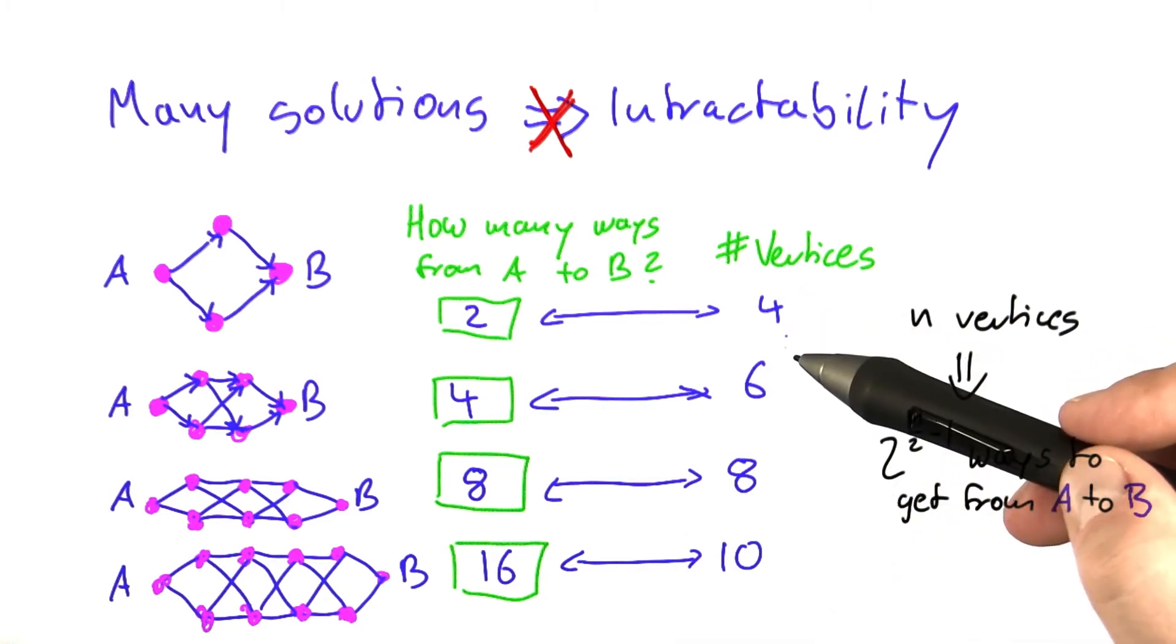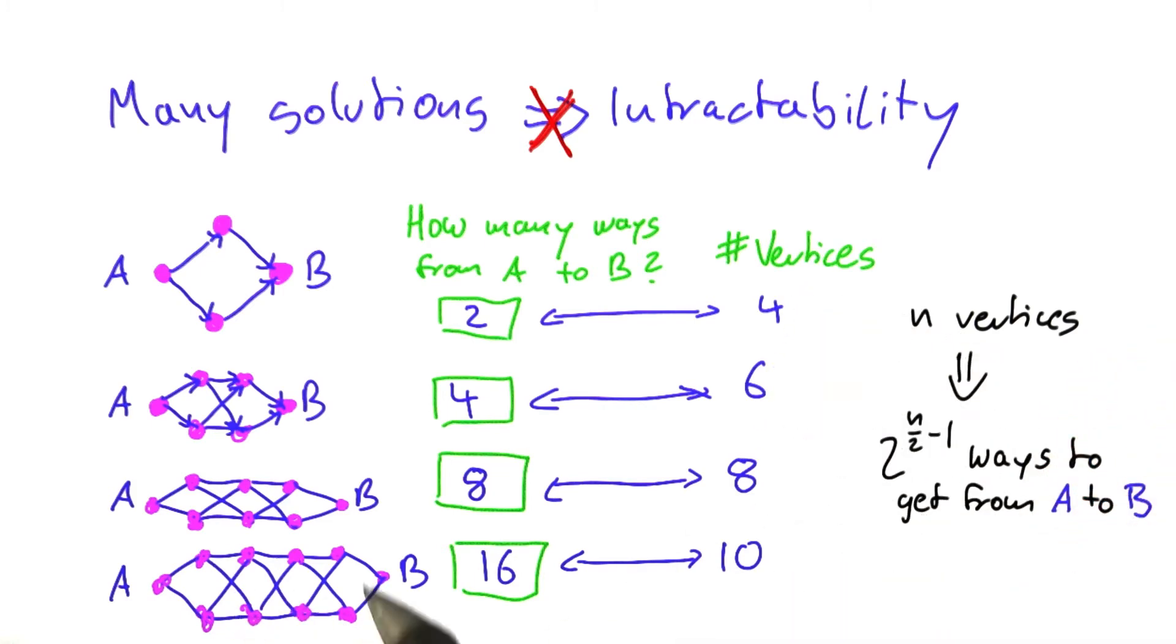In this way, you can work your way up to larger and larger networks of this structure. What you can see is that the number of ways to get from A to B grows exponentially as these graphs get more vertices.